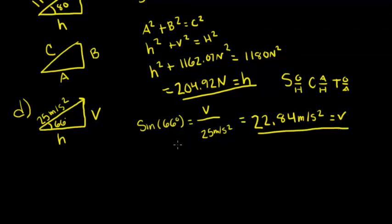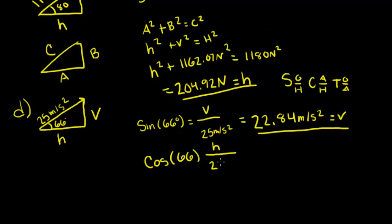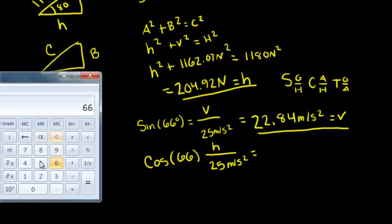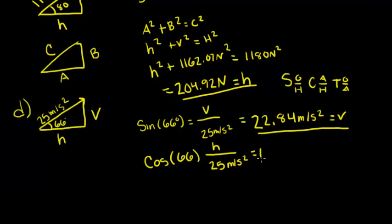Now let's find the horizontal. We can either do Pythagorean theorem or cosine — cosine is easier, so let's do that. Our horizontal is the adjacent side to the angle, and we know the hypotenuse. We plug this into our calculator and our answer is 10.17 meters per second squared, and that's our horizontal component.